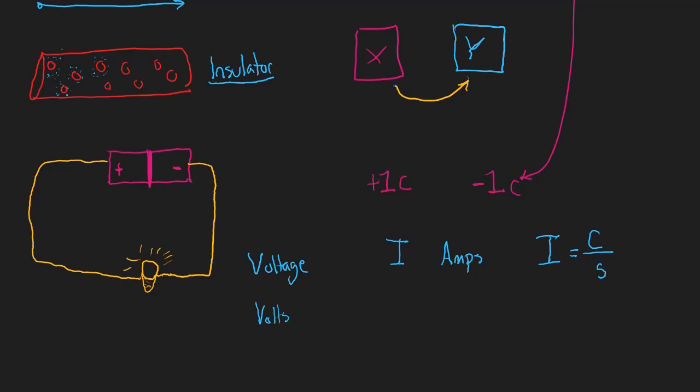Voltage is measured in volts, typically represented with a lowercase v. For example, you've probably heard of a nine-volt battery — that's how we would understand voltage. So those are the key concepts: voltage, current, and the Coulomb.